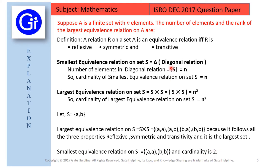So friends, for the first part — the number of elements in the largest equivalence relation — the answer is n squared. With this explanation we are having 1, 2, 3 and 4 elements, so the number of elements is n² = 2² = 4.